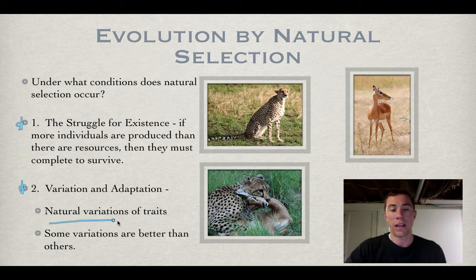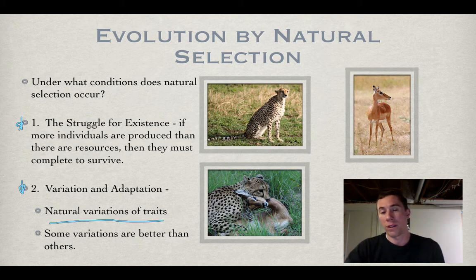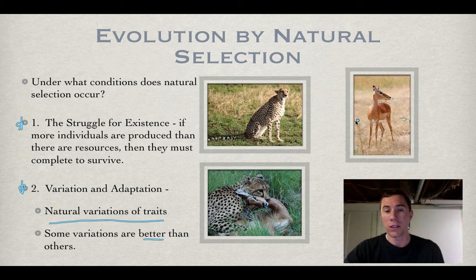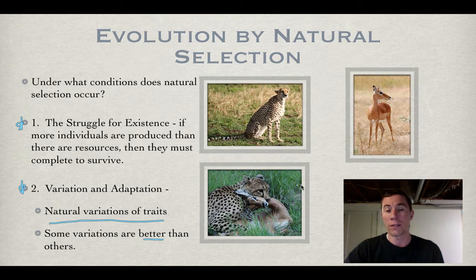There is a natural variation of traits. For example, if we look at this gazelle over here, this gazelle could be of a light color, while another gazelle could be more of a darker color. Some variations are better than others. If this gazelle's coat color matched the background, then it'd be easily camouflaged and harder for the cheetah to spot it. But if the coloring wasn't very good and it stuck out from the background environment, then it's going to be more likely to fall prey to the cheetah.